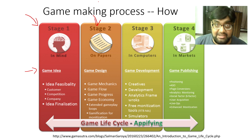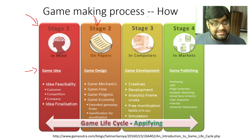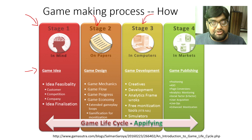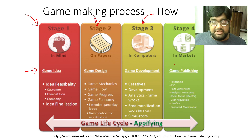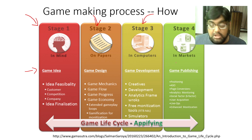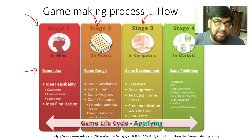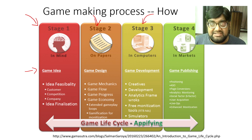Once your game design document is ready, we reach the next stage, which is when you turn on your computer and start coding or writing the game. In this stage, we will need the creatives: artwork, 3D and 2D models, images, sounds, music, and obviously your code. All these things are put together to actually make the game, along with some APIs and tools to monetize the game.